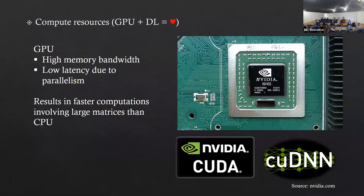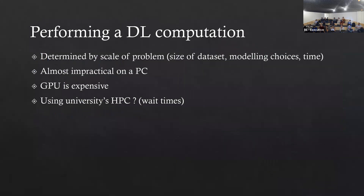Let me give you a hypothetical situation. If you want to do a deep learning calculation today — for instance, if you're looking to participate in a Kaggle competition, or you're in a small startup looking to do your first project, or even if you're a researcher looking to get insights from a vast amount of data you've collected — you need to consider certain things such as how big your dataset is, what modeling choices you have, and also time. Time is a big factor, and it's almost impractical to run large deep learning computations on a PC, which uses CPU.